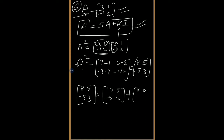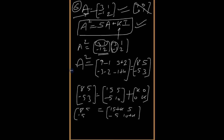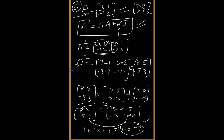kI means k × I, where I is the identity matrix [1, 0; 0, 1], so kI = [k, 0; 0, k]. The right side becomes [15+k, 5; -5, 10+k]. Left side is [8, 5; -5, 3]. Comparing: 10 + k = 3, so k = -7.